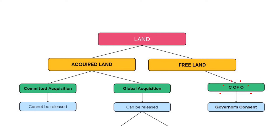A Certificate of Occupancy cannot be issued twice. It can only be issued to the first owner of the land to register it with the government. Once the land is transferred from one hand to another, the other parties who buy the land must apply for the Governor's Consent for the land to be transferred. So freehold land is very straightforward: Certificate of Occupancy and then Governor's Consent.